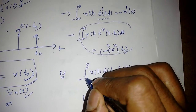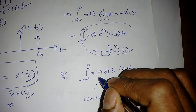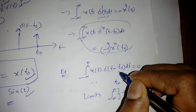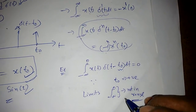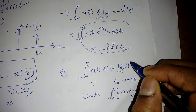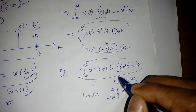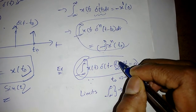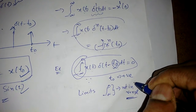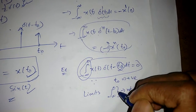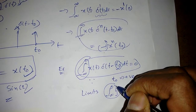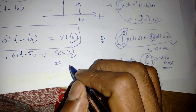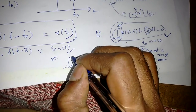Another important case: the integral from minus infinity to 0 of x(t)·delta(t - t₀) dt — if t₀ is positive, it is not in the range from minus infinity to 0, so the result becomes 0. The impulse must fall within the integration limits to contribute.